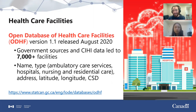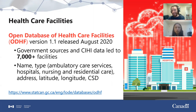The Open Database of Healthcare Facilities version 1.1 was released in August of 2020, just a few months after the original release in April 2020. We used government sources and data shared by CIHI — the Canadian Institute for Health Information — to put together a list of hospitals, residential care facilities, and ambulatory care facilities such as clinics, totaling about 7,000 facilities. Information includes the facility name, type — mapped to ambulatory care services, hospitals, or nursing and residential care — address, latitude and longitude or geocoded coordinates, census subdivision, and data provider for attribution. Released under the Open Government of Canada license.